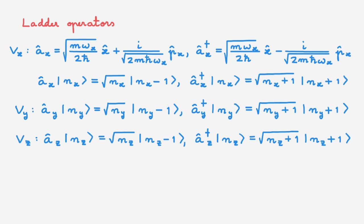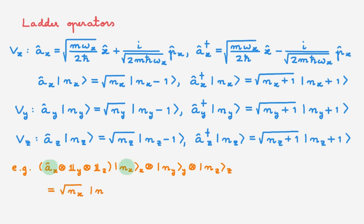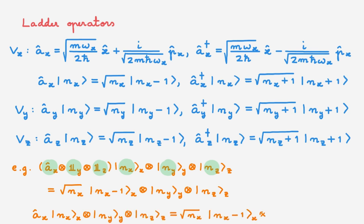From the video on tensor product state spaces, we know how to extend the action of these ladder operators to the full state space. For example, the operator Ax acting on an energy eigenstate |nx, ny, nz⟩ means that Ax acts on |nx⟩, the identity acts on |ny⟩, and the identity acts on |nz⟩. In the simplified notation, we simply write Ax acting on the tensor product state giving the new tensor product state, with the identities in Vy and Vz implicitly understood.